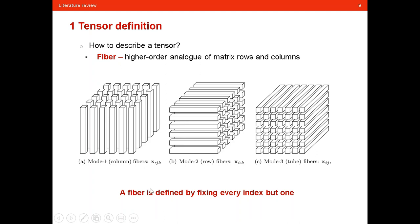A fiber is defined by fixing every index but one. Mode-two fibers vary along the second direction while the first and third dimensions are fixed. Mode-three fibers vary along the third direction — called tubes — while the first and second dimensions are fixed.